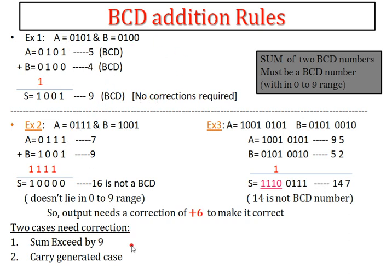In example 2, A is 0111 (which is 7) and B is 1001 (which is 9). I am performing the addition of 7 and 9. The sum is 10000, which is 16. Since 16 is not a BCD value — it is not in the range of 0 to 9 — this is an invalid result requiring correction.